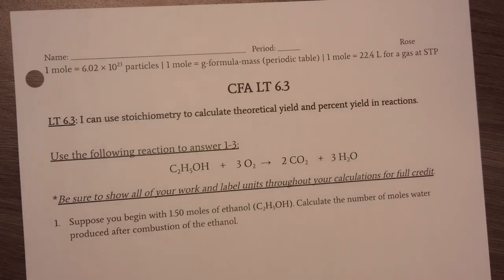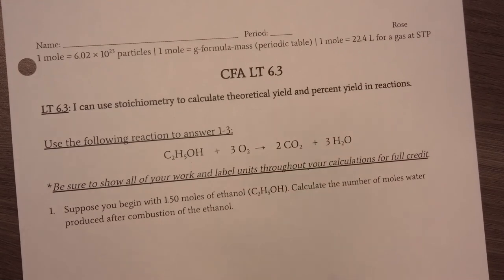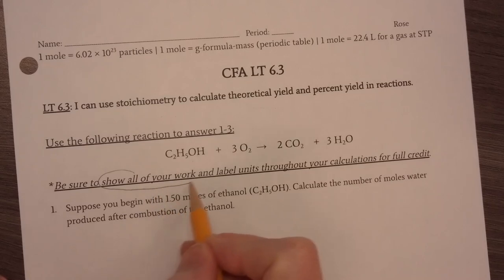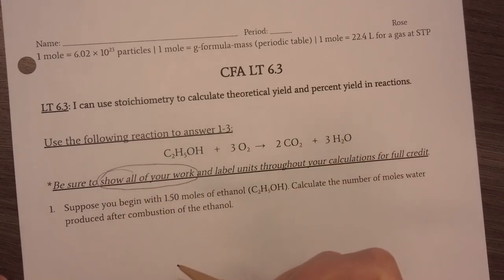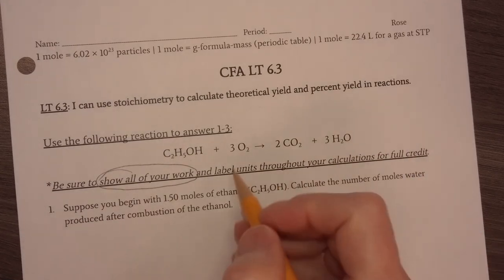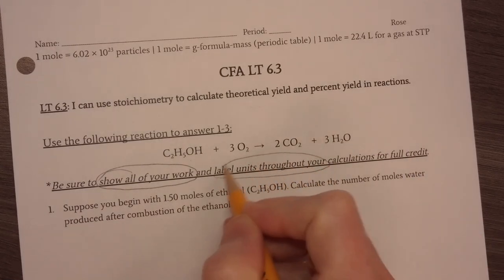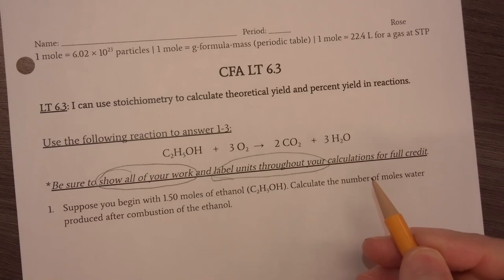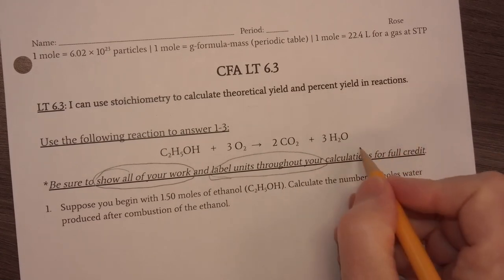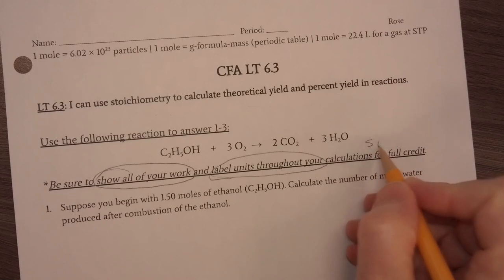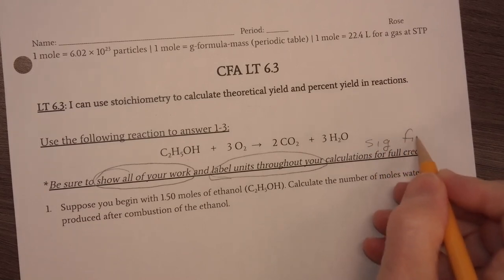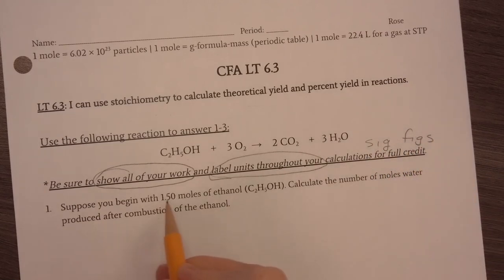One of the things that is really important as you go through there is to show all your work. On the final or the summative, if you do not show all your work, even if you have the correct answer, you will not get credit. And label units throughout, but especially at the end. The other thing that you will lose points for is if you do not use proper significant figures. So look at the measurements. For example, this has three significant figures in the problem. That means you need three significant figures in your answer.